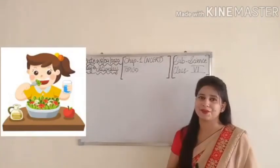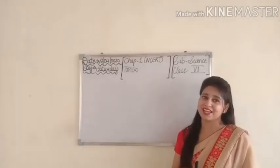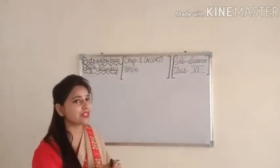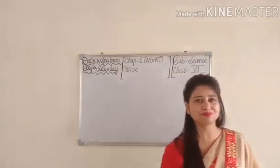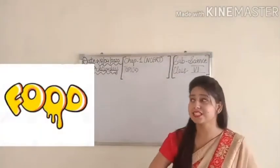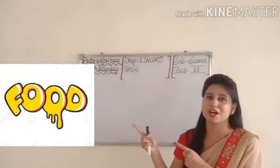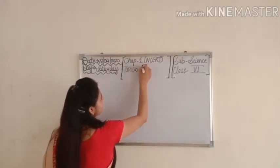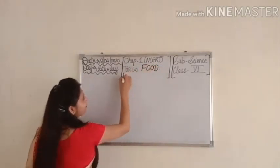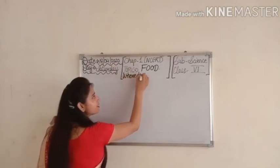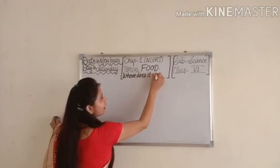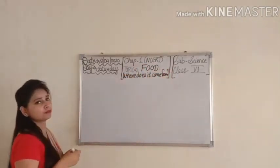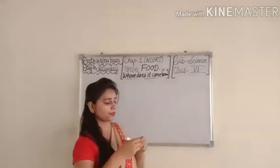As we all know, food usually comes from plants and animals. So food is very important for our body to survive. Today's topic is: Food — Where Does It Come From? All of you write down the topic: Food, Where Does It Come From?